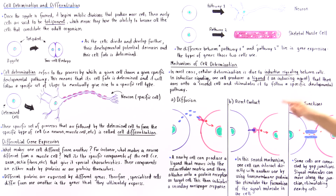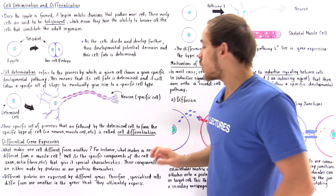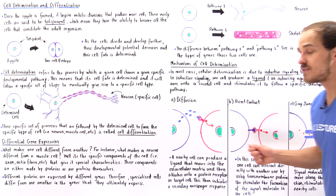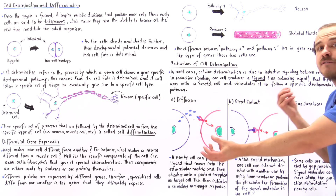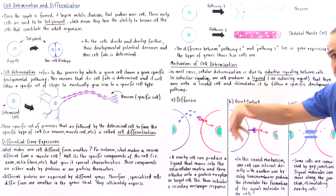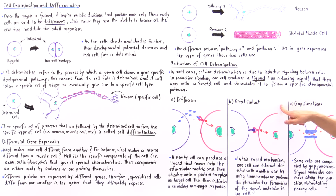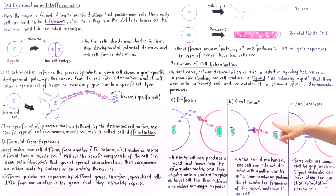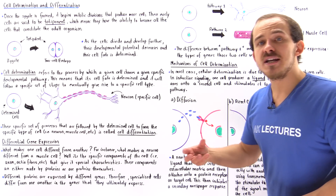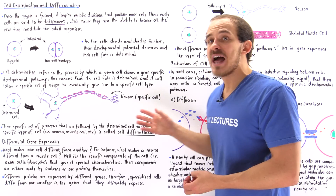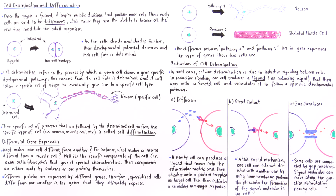Mechanism number two is direct contact. In this case, those cells actually physically interact. A protein on one cell interacts with a protein on the membrane of the other cell, and when they bind, that initiates the creation of some type of internal signal. That signal alters the gene expression of that cell, which ultimately determines what type of pathway the cell will follow and what type of cell it will actually produce.